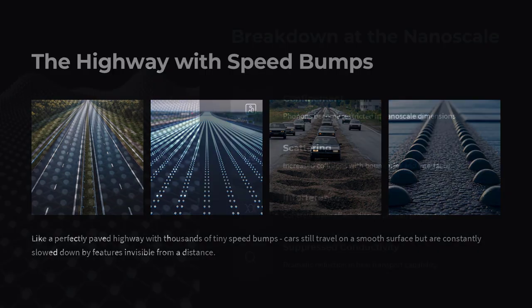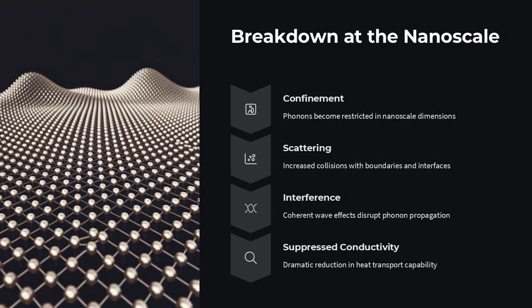But in some nanostructured materials, even though the road appears perfectly smooth on the atomic scale, the cars still can't travel far.